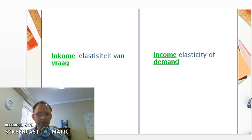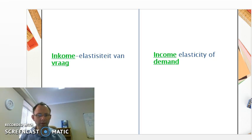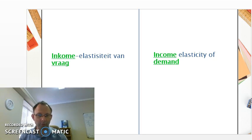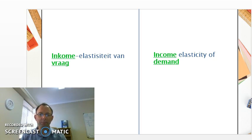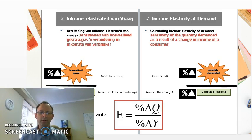We're continuing our discussion on elasticity. We've already looked at price elasticity of demand. Now we look at the three remaining ones: income elasticity of demand, cross price elasticity of demand, and price elasticity of supply. Let's start with income elasticity of demand.